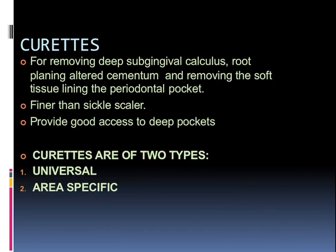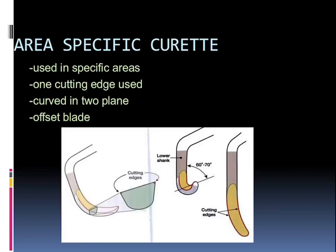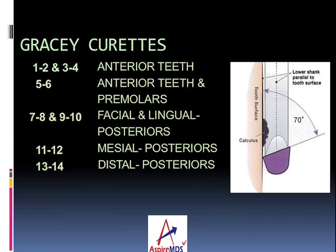Curettes are used for the removal of deep subgingival calculus, root planing, altered cementum, and removal of the soft tissue lining the periodontal pocket. They are finer than scalers and provide good access to deep pockets. Curettes are of two types: universal — which can be used at any space or any surface in the oral cavity — and area-specific, which are used in specified areas with one cutting edge and are curved in two planes with an offset blade at an angulation of about 60 to 70 degrees.